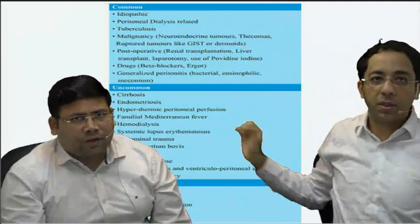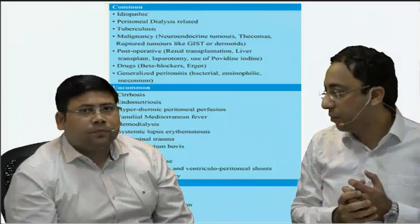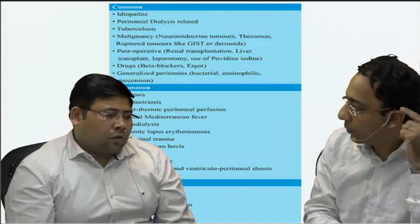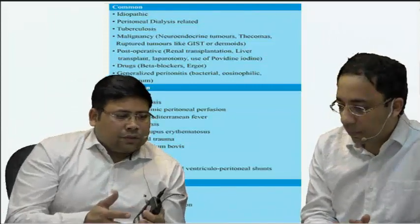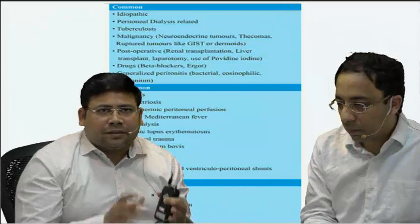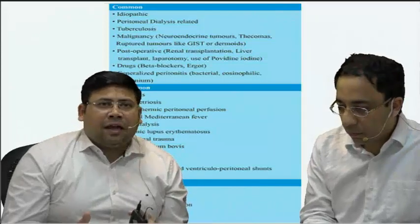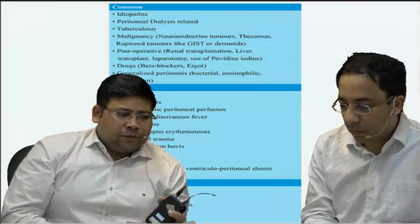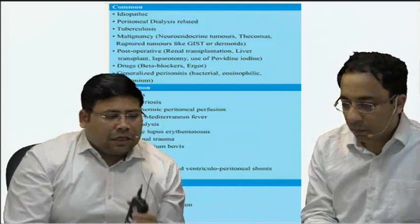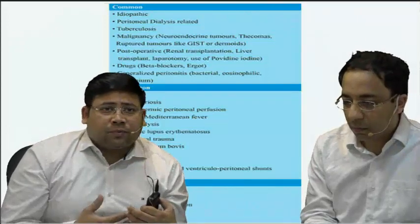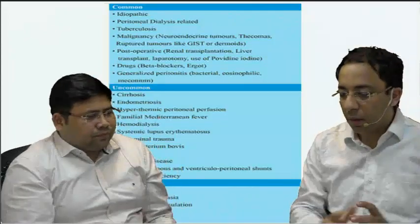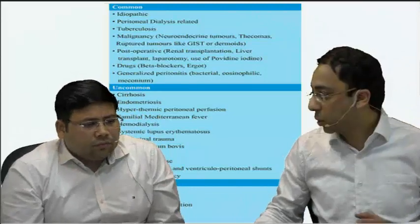Once we have the workup, we try to rule out all possible causes. The approach towards a patient with encapsulating peritoneal sclerosis: the core of diagnosis lies in the history as well as radiology. From a radiology standpoint, CT scan is the Achilles heel of diagnosis — CT scan confirms the diagnosis. It is then our responsibility to approach the patient, and there are two approaches: operative and non-operative.